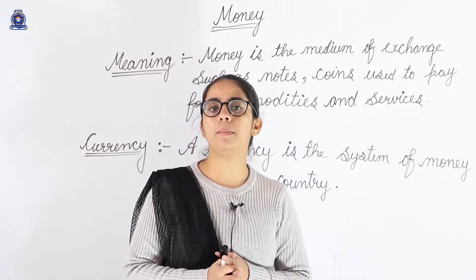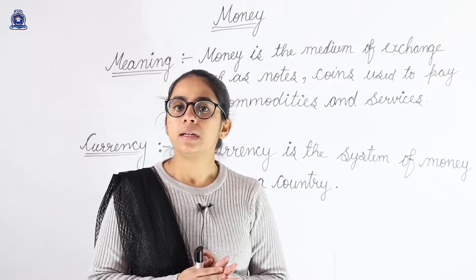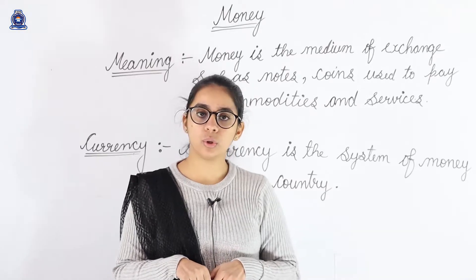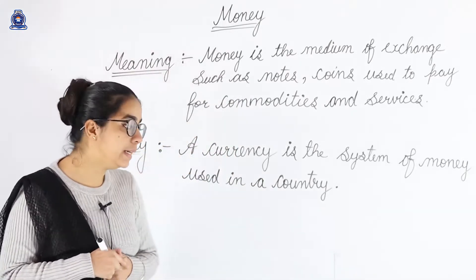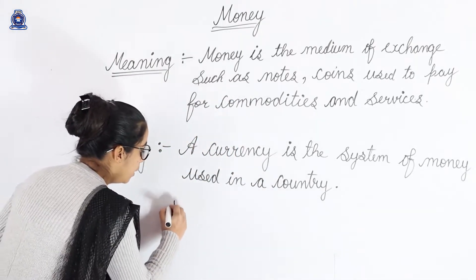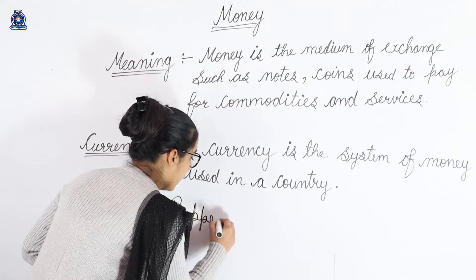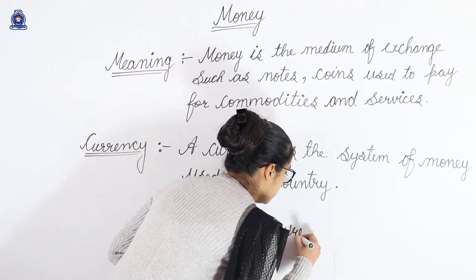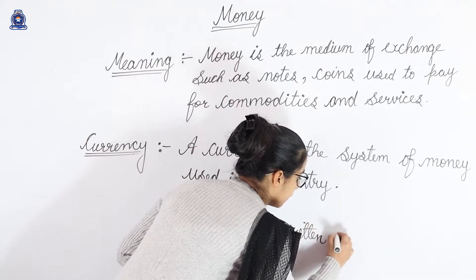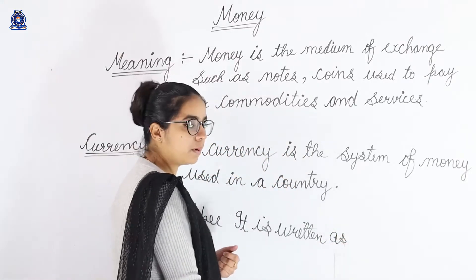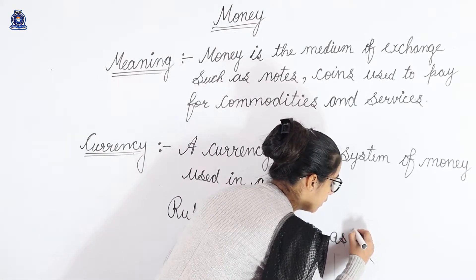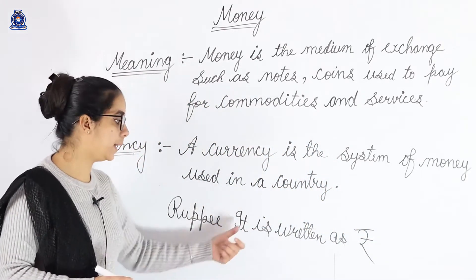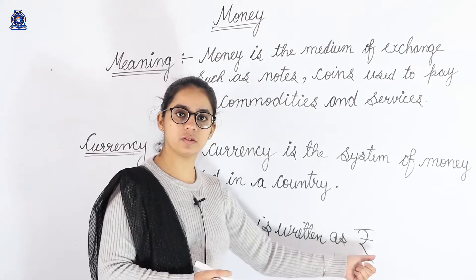Currency ek system hai jahan money use hoti hai. Jis tarah se USA mein dollar ka use hota hai, usi tarah se India mein rupee use hota hai. And our rupee symbol is written just like this — so our Indian currency is rupee and it is written with its symbol.